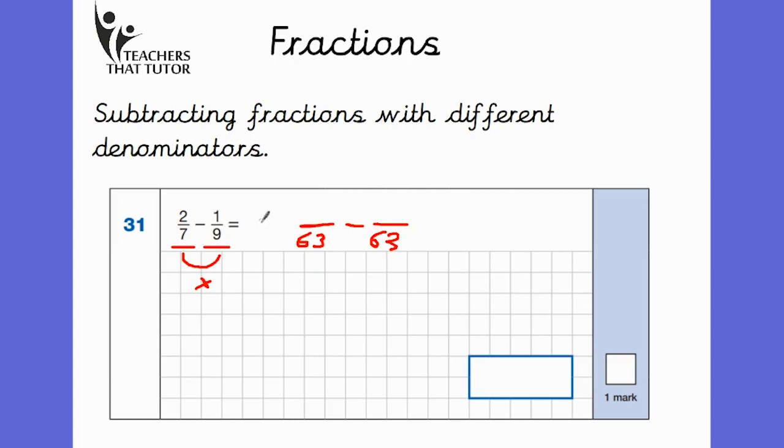Now, we need to convert both of these fractions into 63rds. So how did I get from 7 to 63? I times by 9. Whatever you do to the bottom, do to the top. Two 9s are 18. How did I get from 9 to 63? I times by 7. Whatever you do to the bottom, do to the top. 1 times 7, 7. Now I have both fractions as 63rds. I can now take one away from the other. So 18 take away 7 is going to be 11. 11 over 63. 11 over 63 would be your correct answer.